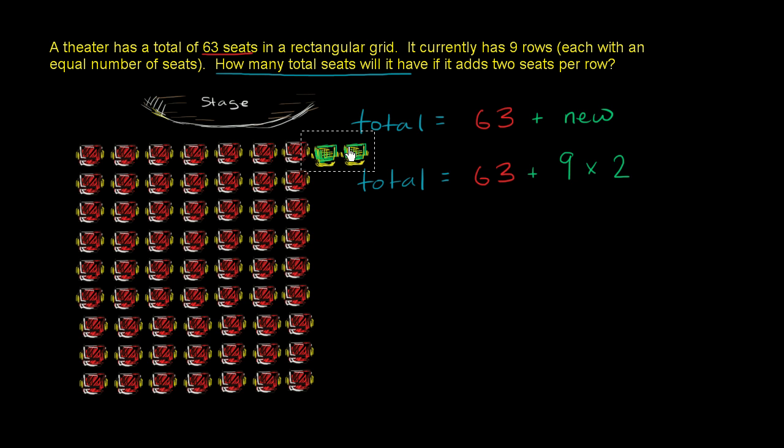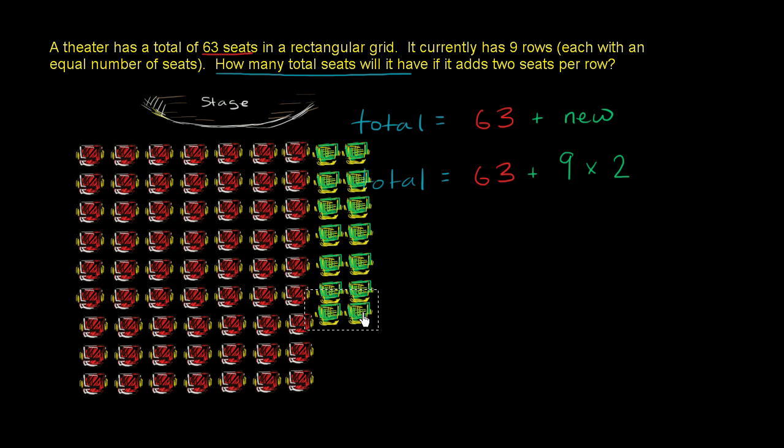Well, let's add those two seats per row. So that's 2, 4, 6, 8, 10, 12, 14, 16, and 18. So 2 times 9: 2, 4, 6, 8, 10, 12, 14, 16, 18 is 18.